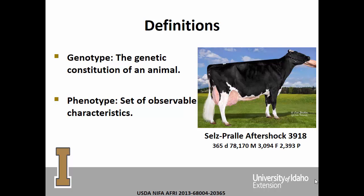Here's a picture of Sayles Prowl Aftershock 3918, a national cow leader in milk production. In 365 days, she produced almost 78,200 pounds of milk, 3,000 pounds of fat, and almost 2,400 pounds of protein. This is an official record — a phenotype that was measured. This is very important when talking about genomics and genomic testing or genotyping, because we're going to associate a phenotype with the animal's genotype.